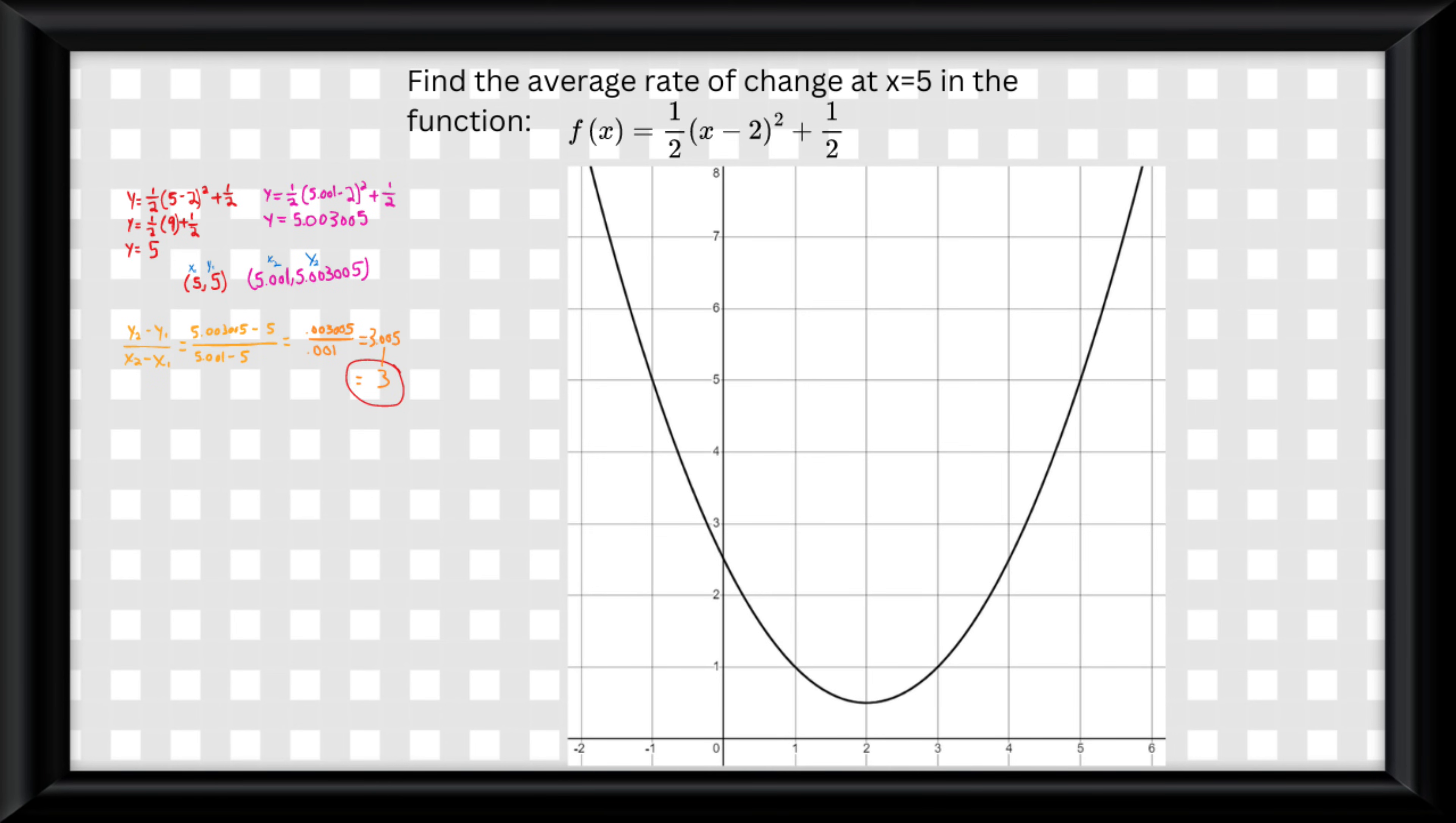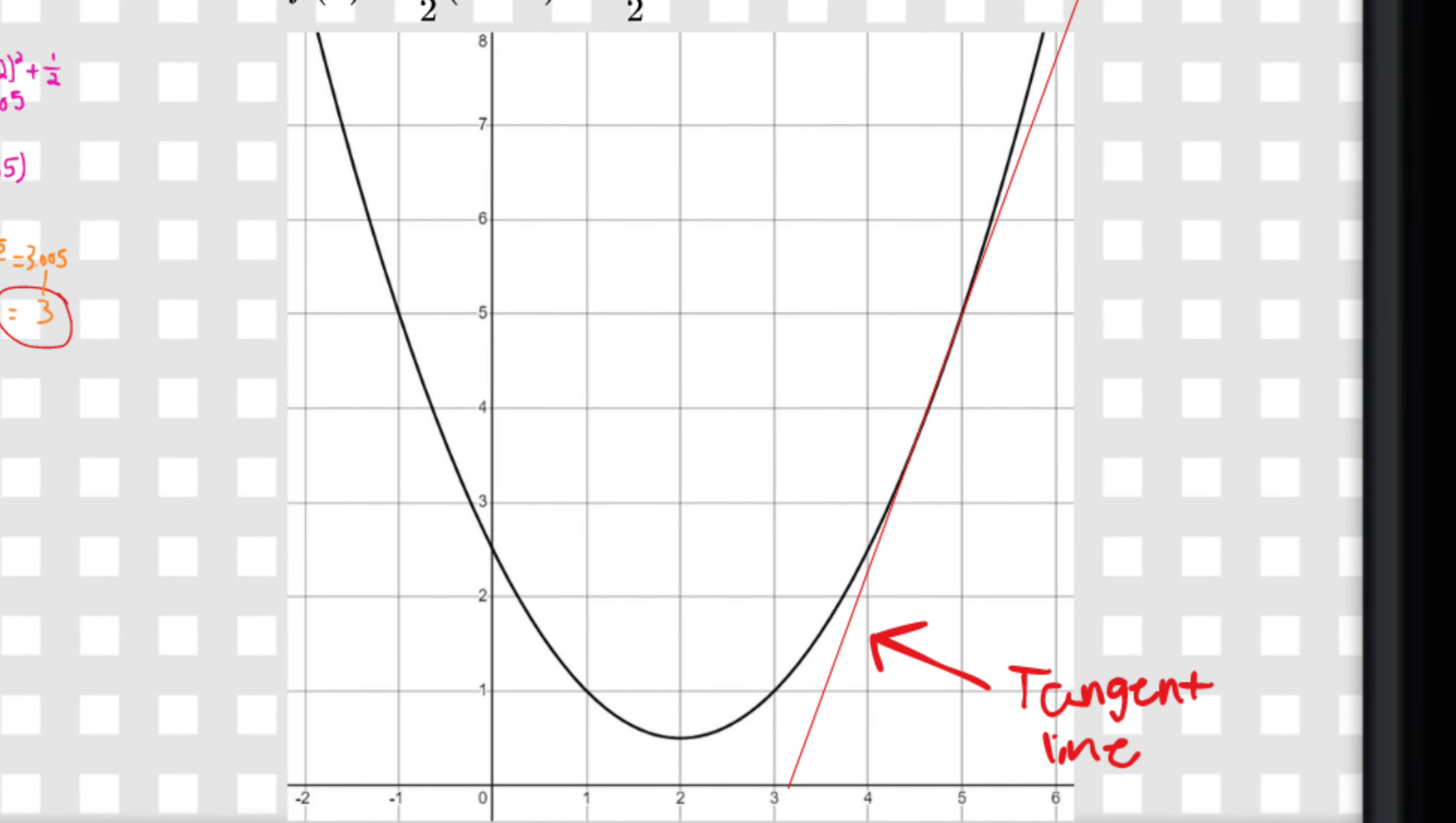If you modeled this on a graph, you would be finding the slope of the tangent line between these two points .001 apart.